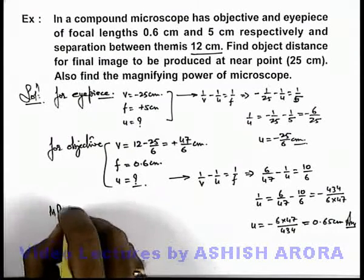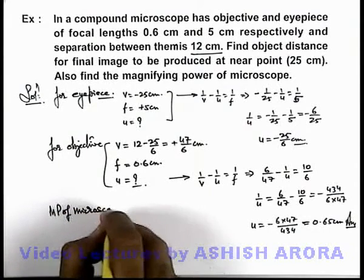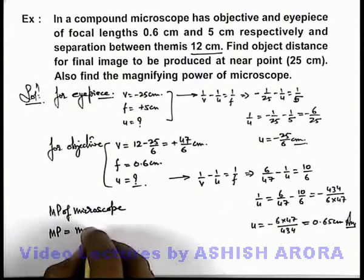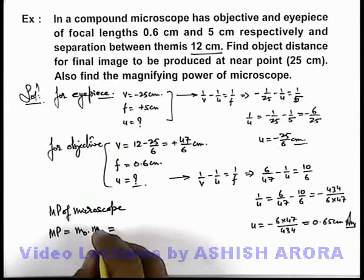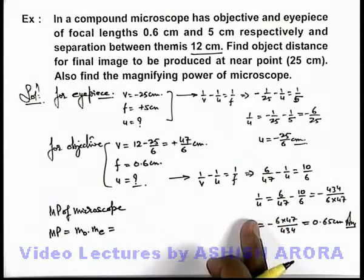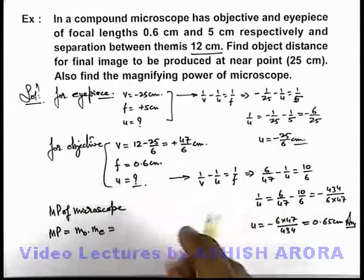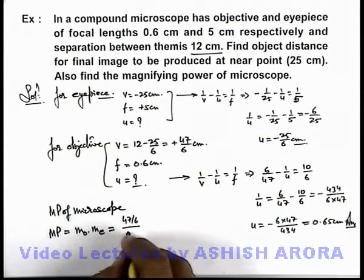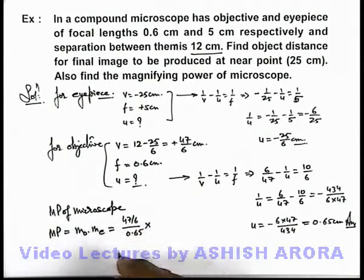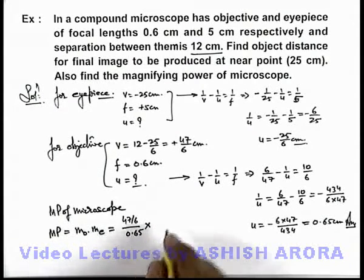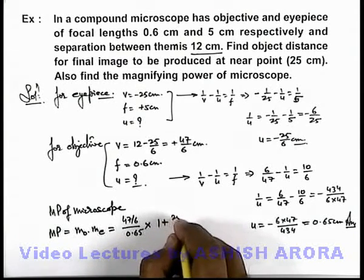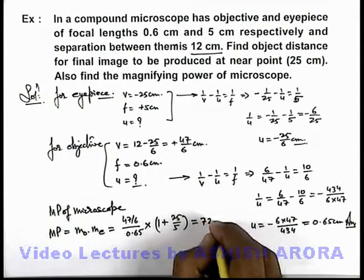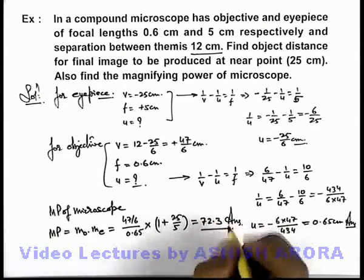Now if we calculate the magnifying power of the microscope, this magnifying power can be written as the product of the magnifying power of the objective and eyepiece. For the objective, the magnifying power is the image distance divided by object distance: 47/6 divided by 0.65. For the eyepiece, it is 1 plus D/f_e, which gives 25/5. On simplifying, we get 72.3, which is the answer to the second part — the total magnifying power of the microscope.